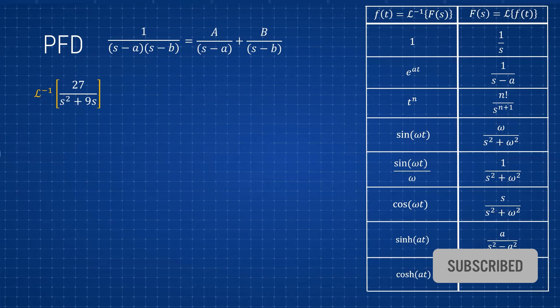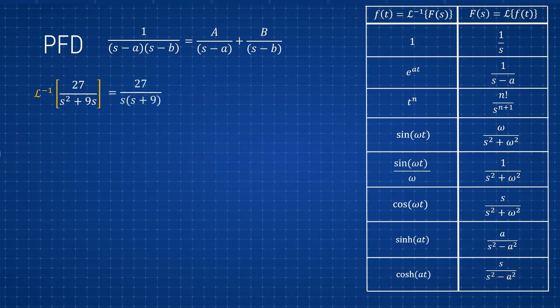If we factor out an s from the denominator, we get 27 over s(s + 9). Now we can rewrite this using PFD as A over s plus B over (s + 9). Any fraction of this form can be rewritten like this — you may have seen this in algebra. Here A and B are just unknown constants that we'll find shortly.